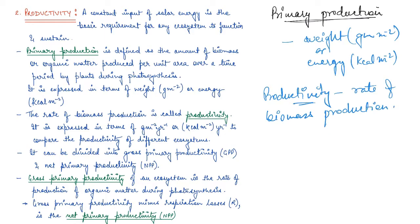The rate of biomass production is expressed as units of primary production per year — either grams per meter square per year, or kilocalories per meter square per year. This is used to compare productivity in different ecosystems. Productivity can be divided into two types: gross primary productivity (GPP) and net primary productivity (NPP).